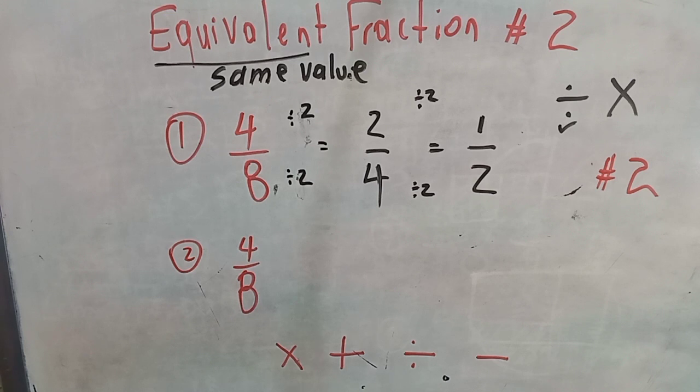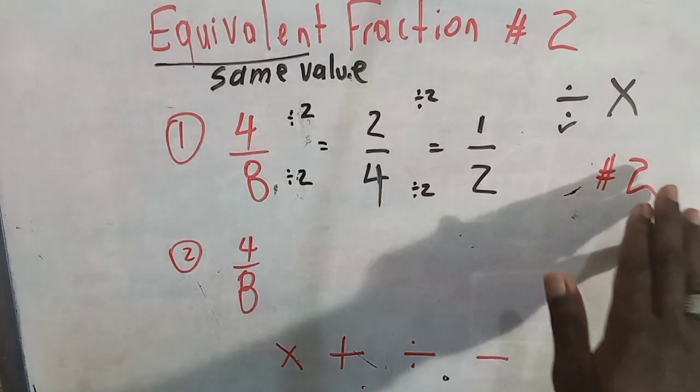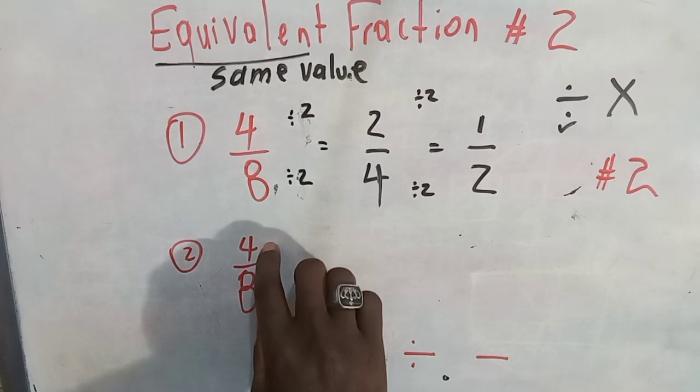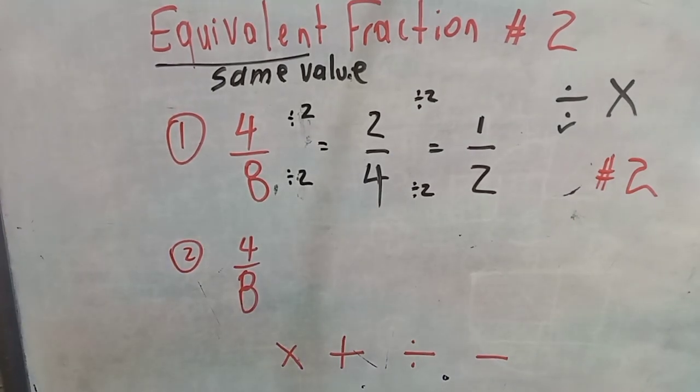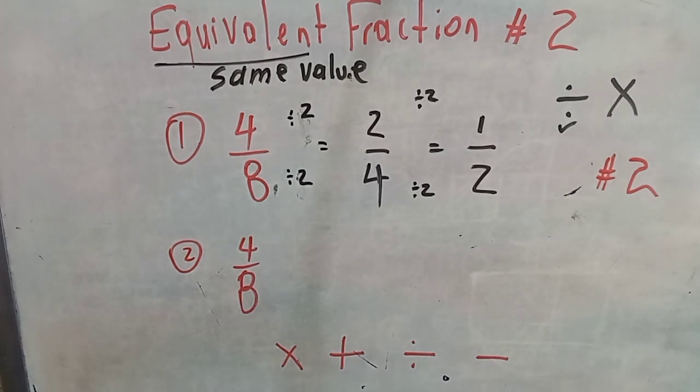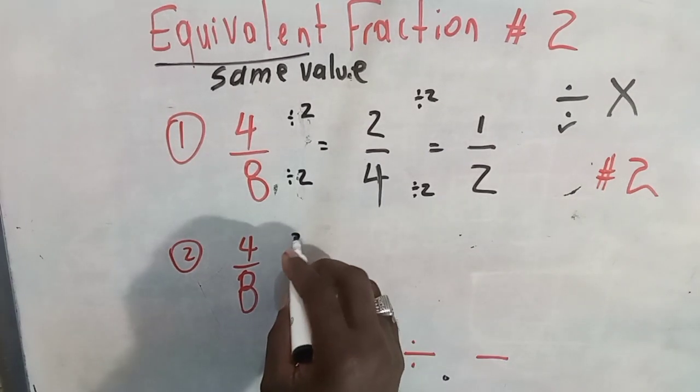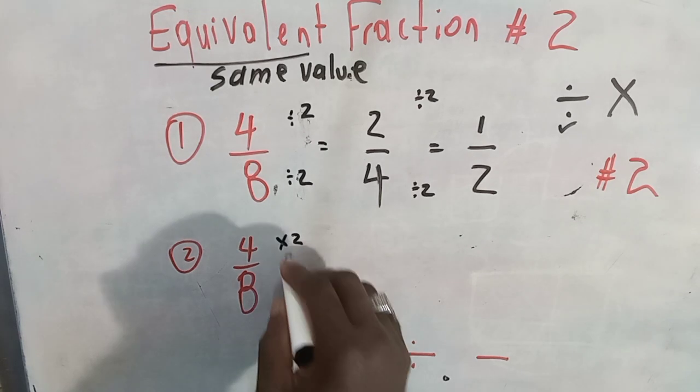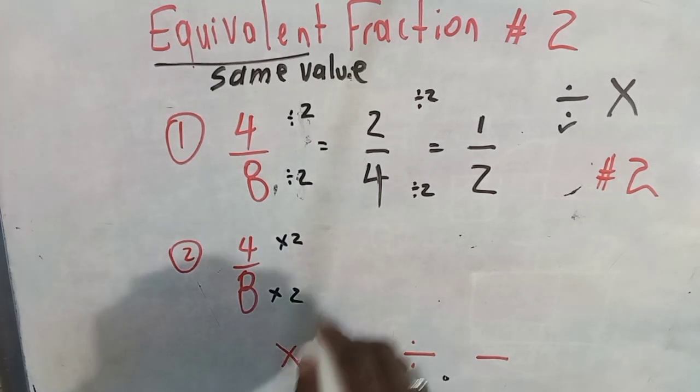Let us use multiplication. Using the numeral two, we're going to create some equivalent fractions using multiplication. Number one, we used division. Number two, we want to use multiplication. If you multiply the top number by a number, you have to multiply the denominator by the same number.